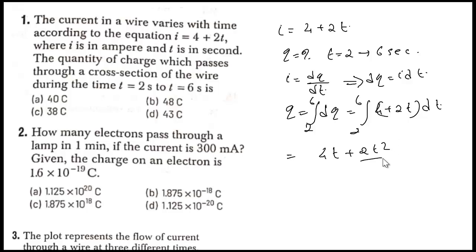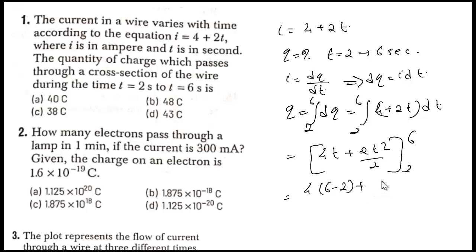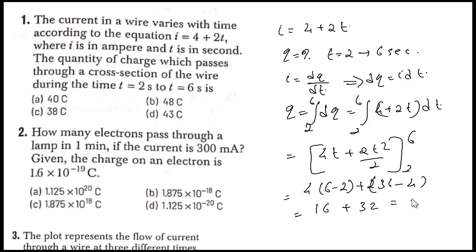Applying the limits 2 to 6: the integral gives 4t + t² evaluated from 2 to 6. That is [4(6) + 36] − [4(2) + 4] = [24 + 36] − [8 + 4] = 60 − 12 = 48. So the answer is 48 coulombs.